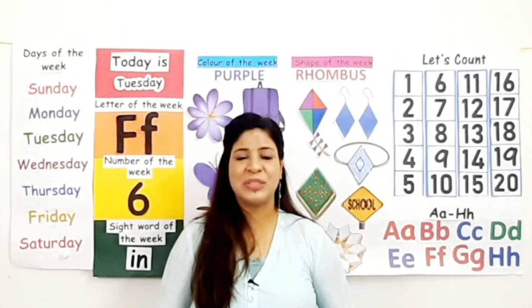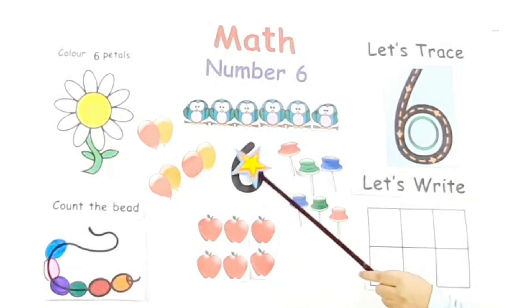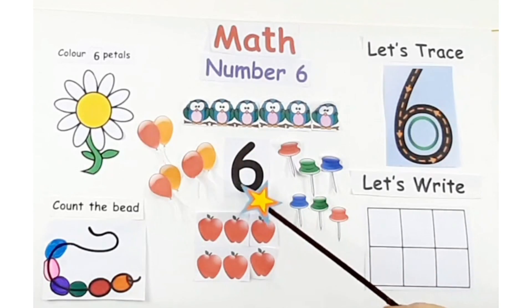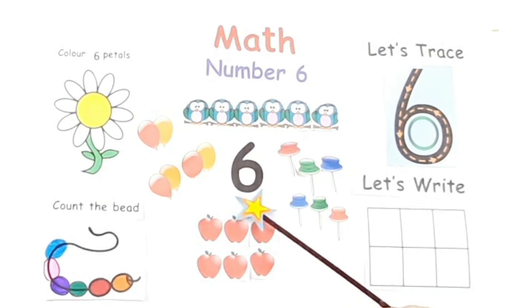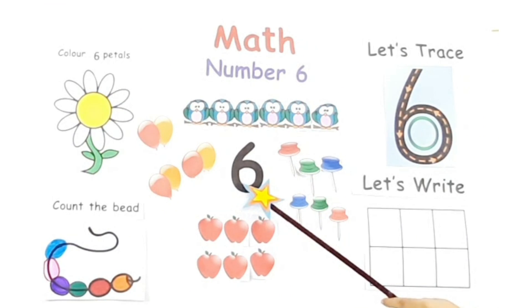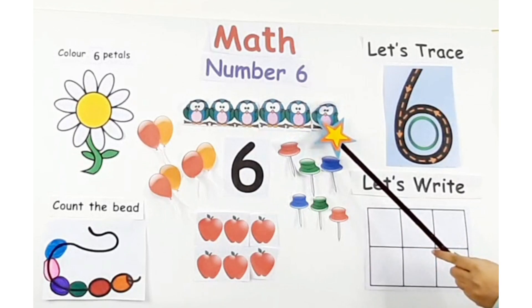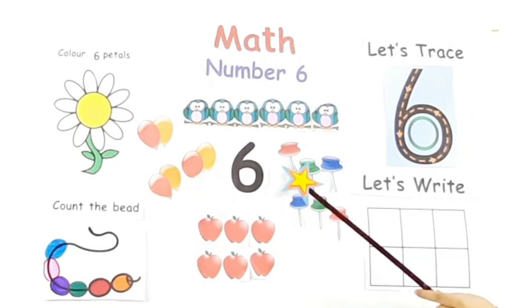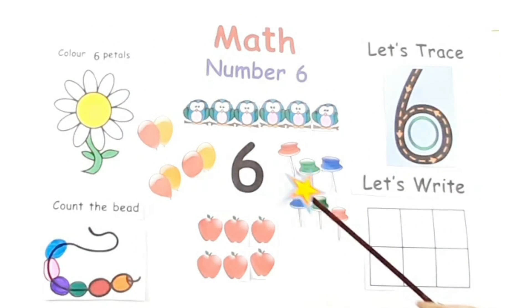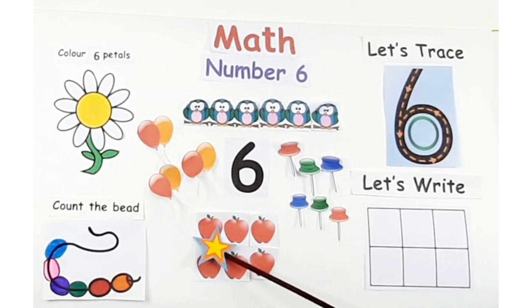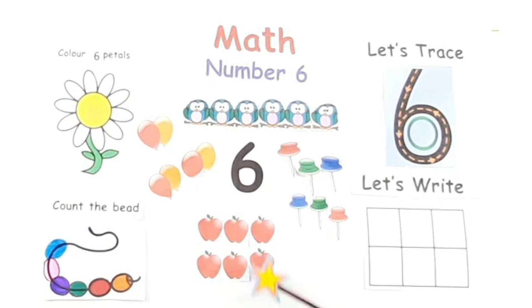So children, today is Tuesday, and on Tuesdays we learn about a new number. Today we are going to learn all about number 6. This is number 6. The formation is: down we go and make a loop, number 6 makes a hoop. Now it's time to count the pictures. Let's count the owls: 1, 2, 3, 4, 5, 6 — six owls. Now let's count the nails: 1, 2, 3, 4, 5, 6 — six nails.